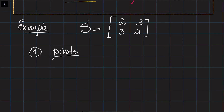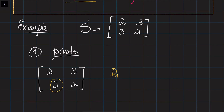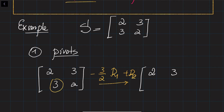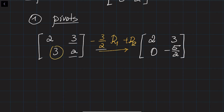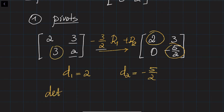To find the pivots, we bring this matrix to row echelon form without multiplying a row by a constant, so we don't change the determinant. Given the matrix 2, 3, 3, 2, we multiply the first row by minus 3 over 2 and add it to the second row. This gives 2, 3, 0, minus 5 over 2. These two diagonal values are the pivots: the first pivot is 2 and the second pivot is minus 5 over 2. The determinant of matrix S equals 2 times minus 5 over 2, which equals minus 5.